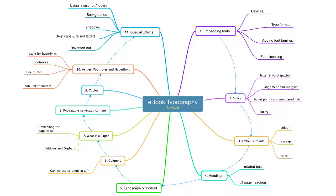What about landscape and portrait? Tablets can be viewed in horizontal or vertical format — what happens when we turn our devices around, and what control do we have? Columns — can we use them? What's a page exactly, and how do we control the page break to ensure content stays on the right page? And widows and orphans — can we use those?